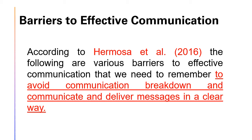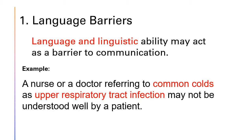The following are various barriers to effective communication that we need to remember to avoid communication breakdowns and deliver messages in a clear way. Number 1: Language barriers. Language and linguistic ability may act as a barrier to communication. Even when communicating in the same style, the terminology used in a message may be a barrier if it is not fully understood by the receiver. For example, a nurse or a doctor referring to common colds as 'upper respiratory tract infection' may not be understood well by a patient. Language barriers may include different language, no clarity in speech, using jargon, and not being specific.